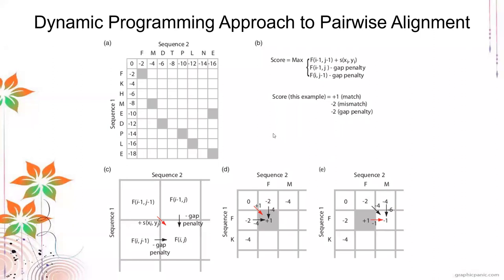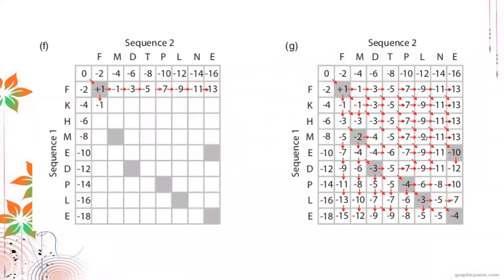We populate the whole matrix with values using this scoring approach. That's why you need a computer to do this — it's very iterative, and if you make a mistake on a single cell, it affects all the rest.